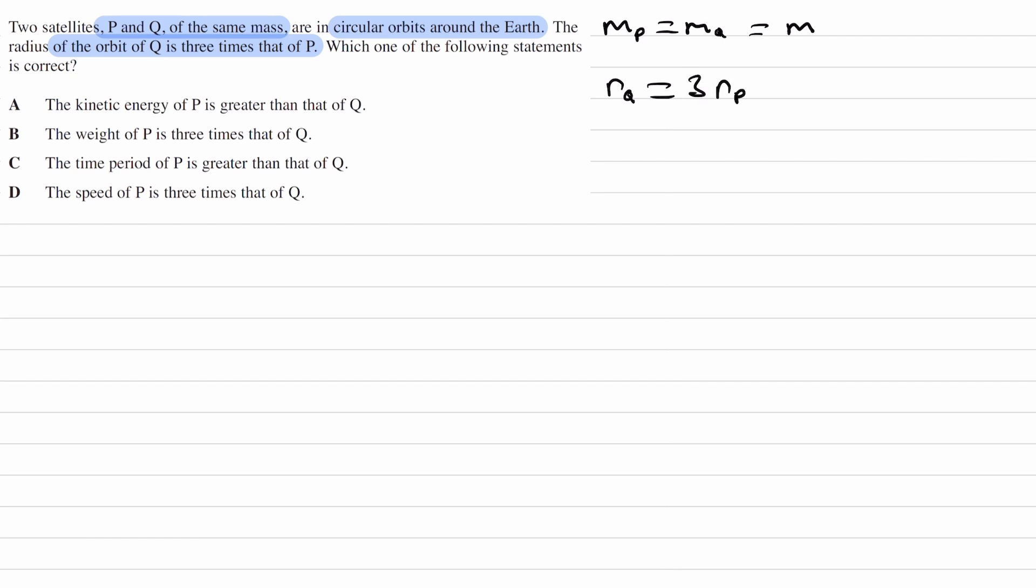Okay, so let's just go through each of the individual options. Let's start with A. Kinetic energy of P is greater than that of Q. So you can derive an equation for kinetic energy, but it's a bit long.